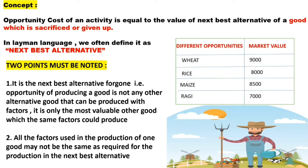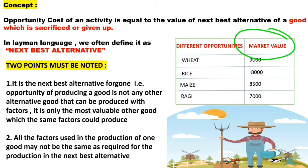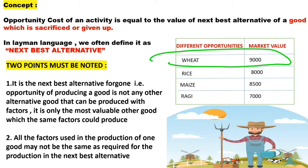Here, I have given you an example of a farmer who has different opportunities of producing wheat, rice, maize, and ragi. You can see the different market values of each product. If the farmer has to choose and he decides to produce wheat, he knows that wheat will fetch him the highest price in the market — 9,000 rupees. So if he has to produce wheat, then he has to give away or sacrifice other options.